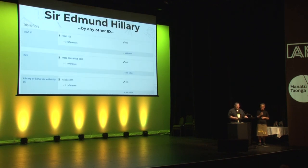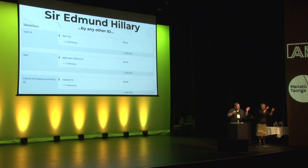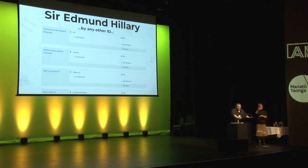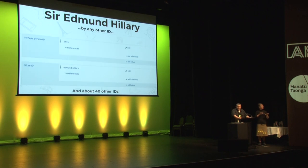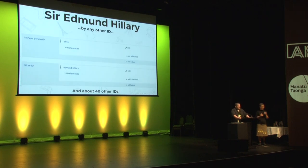Here's a person you may know — the most famous New Zealander I could think of — and here are some other IDs we have for Sir Edmund. The VIAF ID for the libraries in the audience, the Library of Congress ID. Each of these is clickable and takes you directly to that record at that other database — a magical key into those other databases. We have the Dictionary of New Zealand Biography ID, the British Museum Person ID, the Quora ID, the Te Papa ID, and about 40 other IDs just for this one person.